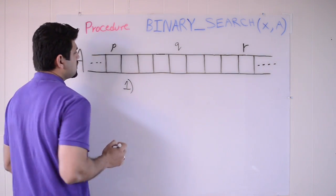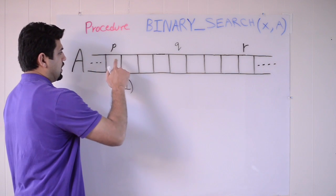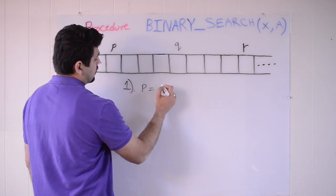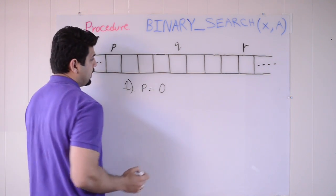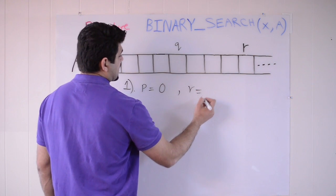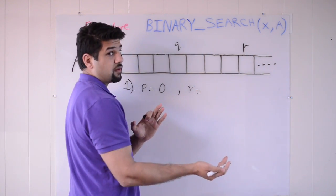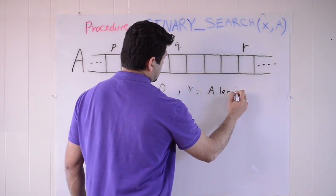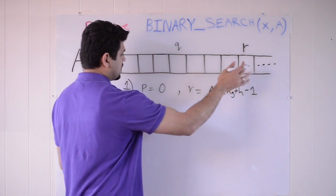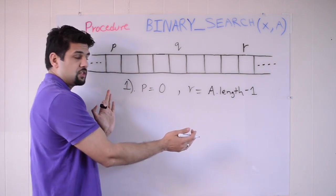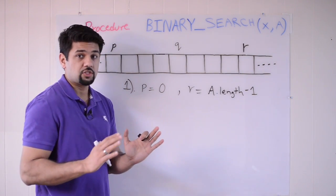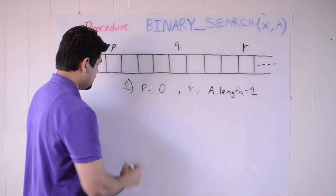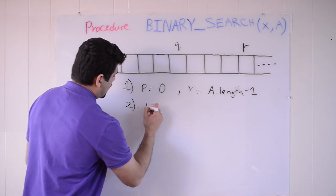The first step is to give initial values to the range, which is the variable p and r. So we can say p originally will have the index value of 0 and r will have the index value of the length of the array minus 1, whatever the length of the array is. We can say a dot length minus 1. That's going to give us the last slot. So we give it initial values and now the range is only going to get smaller. And how is it going to get smaller? We'll have a loop in which we're going to be checking for certain conditions.